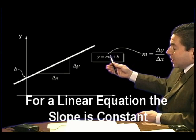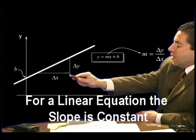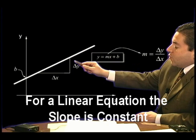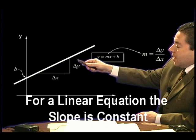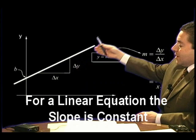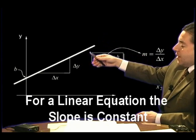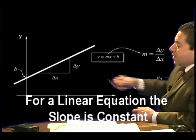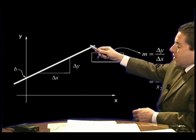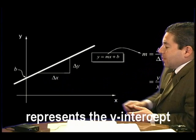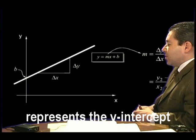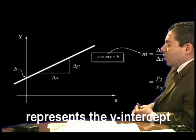That slope for a linear equation is constant, which means that the rate of rise over the extent of the line, the angle of the line, is a constant number. Now B, the second constant here, is the Y-intercept, or the point of intersection of that line with the vertical axis, Y.